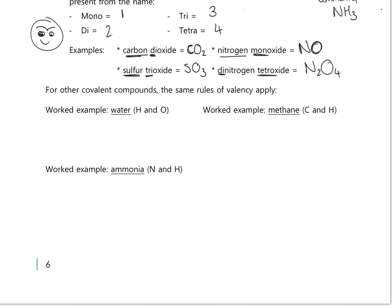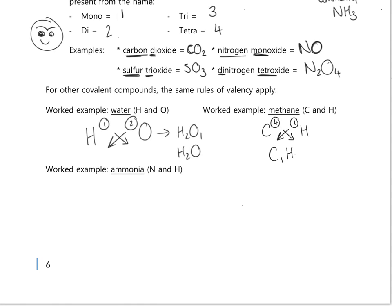For some covalent compounds, valency rules still apply. Water: hydrogen always has valency one; oxygen is in group six so valency two. Swap and drop gives H₂O¹, ignore the one to get H₂O. Methane: carbon is in group four so valency four; hydrogen always valency one. Swap and drop gives C¹H₄; ignore the one to get CH₄. Ammonia: nitrogen is in group five so valency three; hydrogen has valency one. Swap and drop gives N¹H₃; ignore the one to get NH₃.